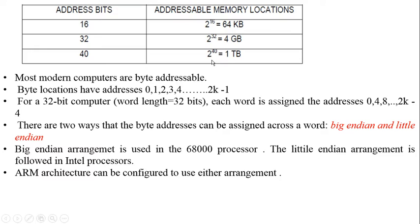If the memory capacity is 1 TB, which equals 2^40, we require 40 bits of address information to uniquely address each byte. Most modern computers are byte addressable, meaning each byte has a unique address. If the memory capacity is 2^k bytes, we need k address bits, and addresses range from 0 to 2^k − 1.